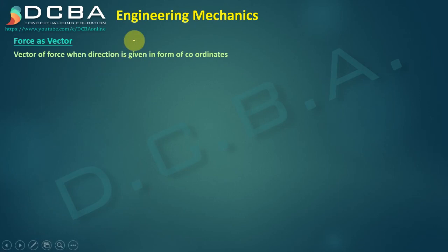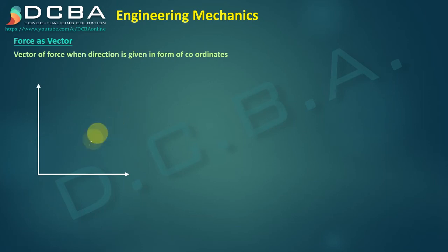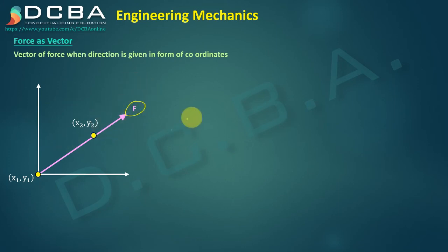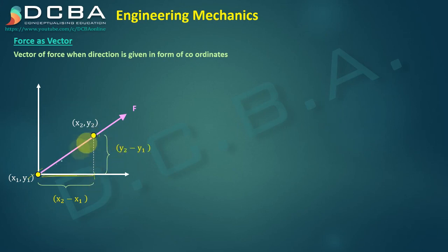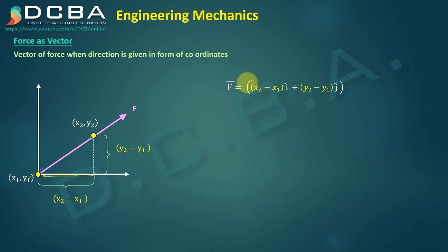Now we'll see how to find the vector representation of a force when two coordinate points are given. If we have two points with coordinates (x1, y1) and (x2, y2) and our force passes through these two points, we need the horizontal and vertical components. The horizontal term between the two points is x2 minus x1, and the vertical term is y2 minus y1. So we can write F vector equals (x2 − x1)·i cap plus (y2 − y1)·j cap.